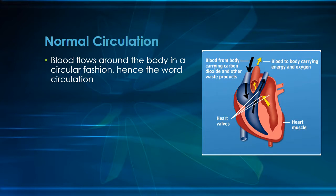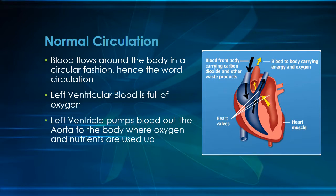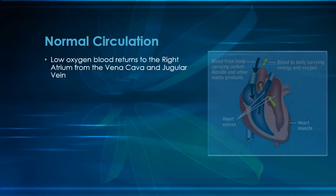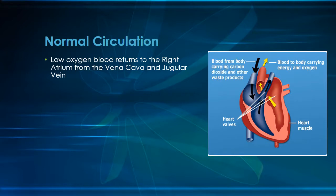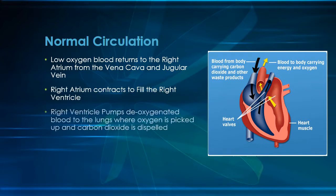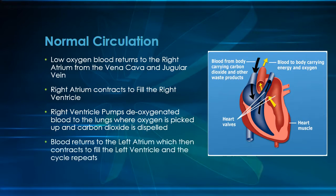We can look at blood flow throughout the body like a big circular path. Starting in the left ventricle, freshly oxygenated blood is sent out the aorta to supply the body with oxygen and nutrients. The oxygen is used by the tissues and the blood becomes oxygen-depleted. This blood returns to the heart through the vena cava and jugular vein to the right atrium, which contracts to fill the right ventricle. The right ventricle pumps the blood to the lungs where it picks up oxygen and gets rid of carbon dioxide, and the oxygen-rich blood then returns to the left atrium to start the cycle again.